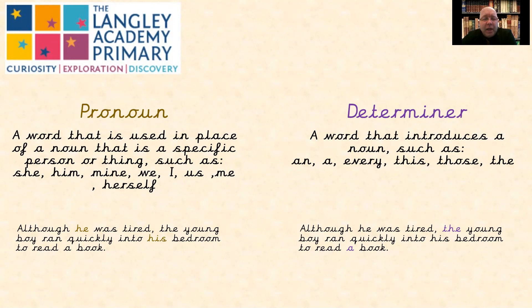So in the sentence example here, we've got: although he was tired, the young boy ran quickly into his bedroom to read a book. It helps us understand that it was the boy who was tired without constantly saying the boy, the boy, the boy. So the boy was tired because it refers to 'he,' and then we know whose bedroom it was — it was his bedroom. Instead of saying 'although the boy was tired, the young boy ran quickly into the boy's bedroom to read a book,' which would get very repetitive, we can use pronouns to replace the noun and make our writing more readable, more palatable for the reader. Avoid all that repetition.